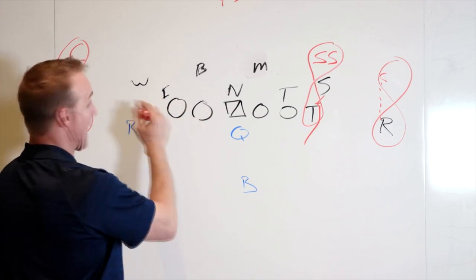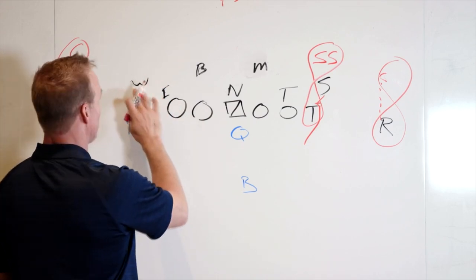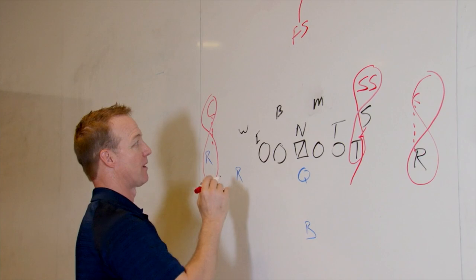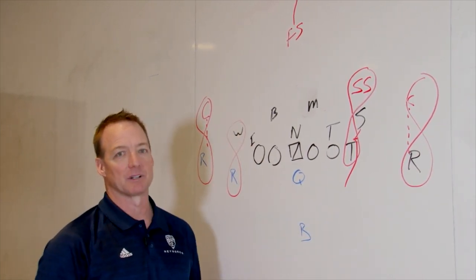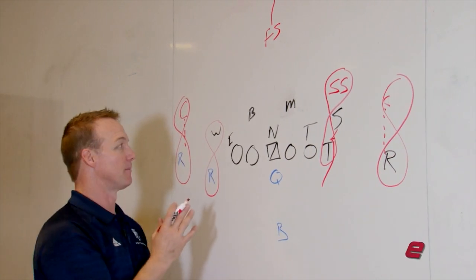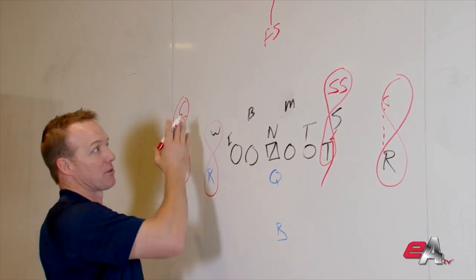Your weak side linebacker, this could be a nickel player, but in this formation that we have here in this 3-4 front, it's a weak side linebacker, is going to be manned up over that receiver. Likely in an inside position, again, trying to force the harder throw over the top.